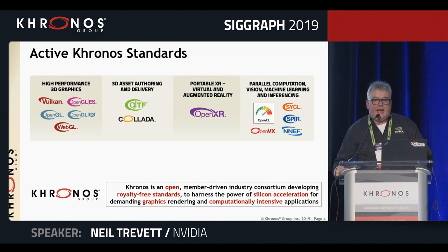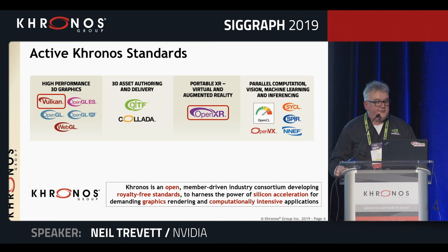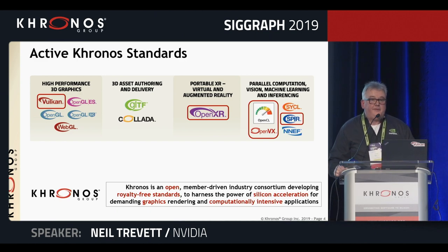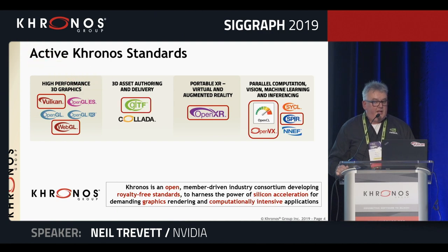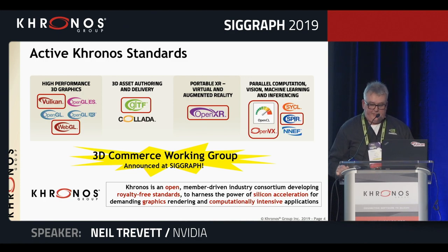These are some of the most active standards we have in Kronos today, grouped in terms of functionality. The ones we're going to be talking about in this session are OpenXR — because we have just launched OpenXR 1.0 here at SIGGRAPH — an update on Vulkan, the new generation 3D graphics API, along with SPIR-V. We'll give a couple of slides on OpenCL and OpenVX, an update on WebGL, GLTF — a 3D file format getting a lot of use in the industry — and a brand new working group announced here at SIGGRAPH: the 3D Commerce working group.